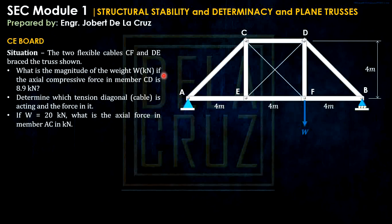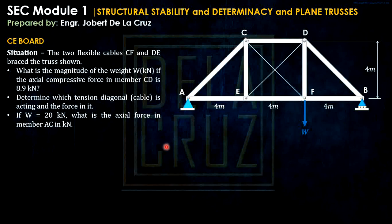The situation is a truss composed of cables CF and DE. The questions are: first, what is the magnitude of W (unknown); second, determine which diagonal cable is functioning in tension and find the force in it; and third, if W is 20 kilonewtons, what is the axial force in member AC?